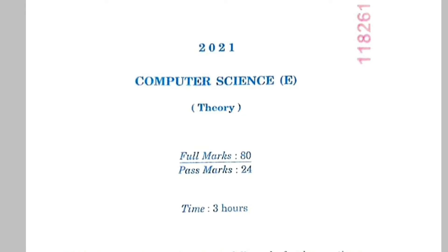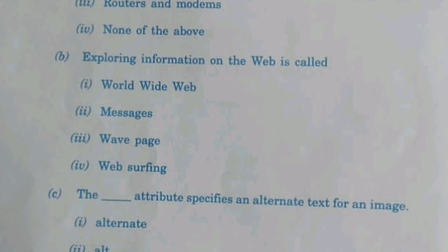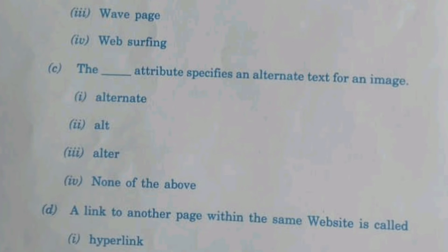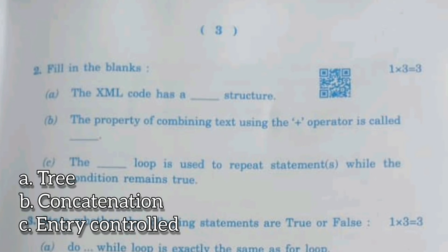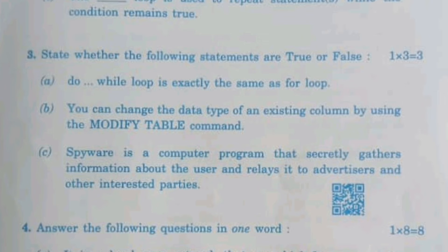The first page is MCQ. Question 1: Help Computer Network to Connect to the Internet. Question 2: Exploring Information. Question 3: Attribute. Question 4: A link to another page within the same website — Local Link. Question 3: Terminator. Fill in the blanks: XML has a free structure. The property combining text using class operator is called concatenation. The loop is Entry Control. Do While Loop. False. Modify Table. Spyware. True.